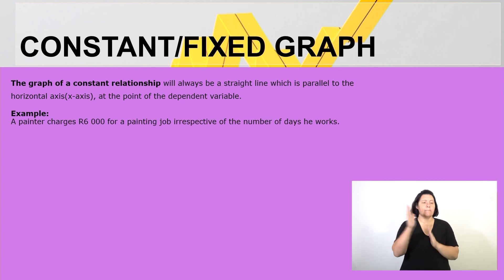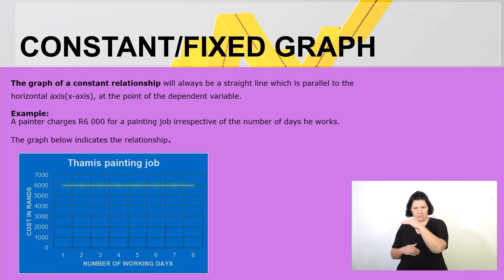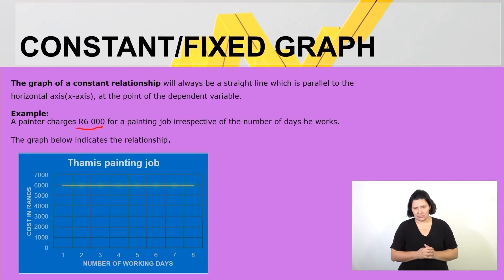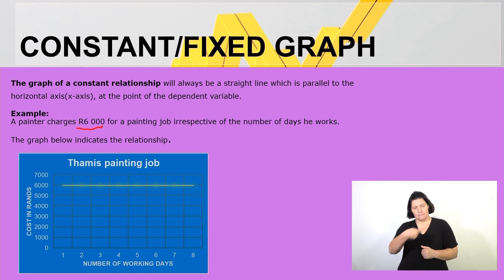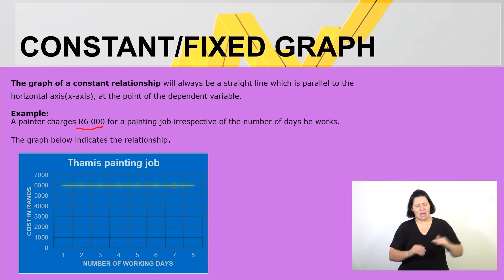Here is an example. A painter charges 6,000 rands for a painting job irrespective of the number of days he works — whether more days or fewer days, the painter must get 6,000 rands. Looking at the graph: if the painter takes one day, he still expects 6,000 rands. Whether the painter takes seven days, he still expects 6,000 rands. So there is a fixed or flat — a constant amount. The pattern we see on the graph is that it becomes flat, so we call it a constant fixed graph.